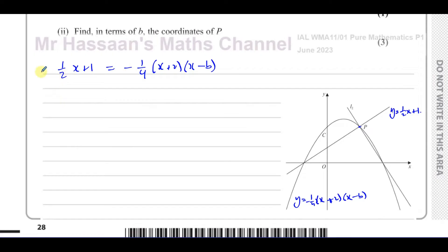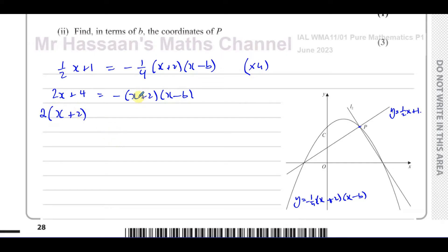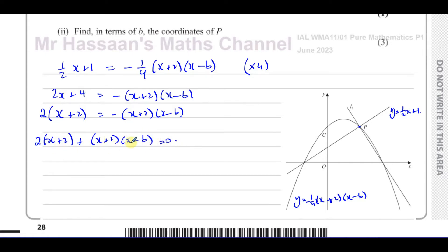To get rid of the fractions, multiply both sides by 4, giving 2x + 4 = −(x + 2)(x − b). Bringing everything onto one side: 2x + 4 + (x + 2)(x − b) = 0. Now I notice that 2 is a factor of the first term, letting me write 2(x + 2) + (x + 2)(x − b) = 0. There is a common factor of (x + 2) in both terms — that's the key trick here.